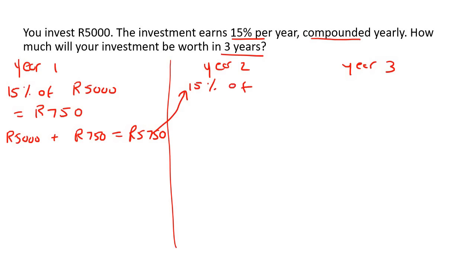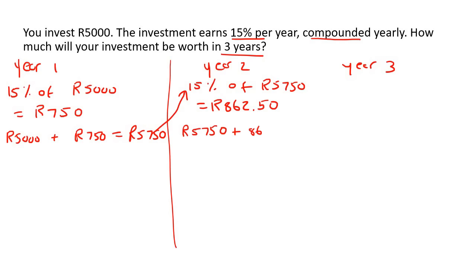So we say 15% of 5,750. If you calculate that, you end up with 862 rand and 50 cents. So then you add those two numbers together: 5,750 plus 862.50, and that'll give you 6,612.50.